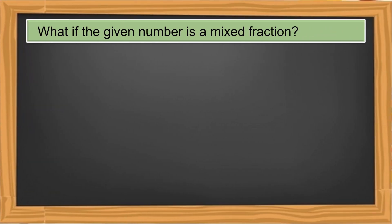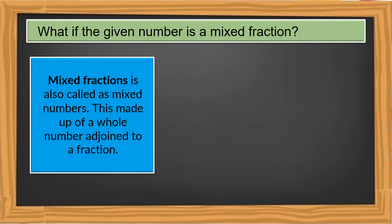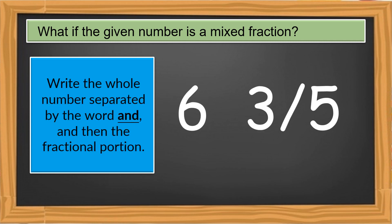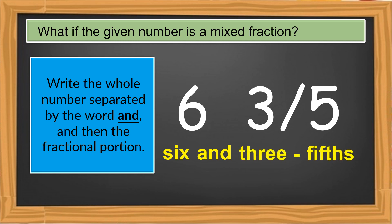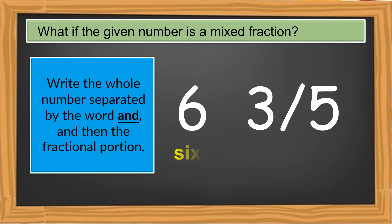What if the given number is a mixed fraction? Mixed fractions are also called mixed numbers. They are made up of a whole number adjoined to a fraction. To write mixed fractions in words, write the whole number separated by the word 'and,' then the fractional portion. This mixed fraction is read as six and three-fifths.